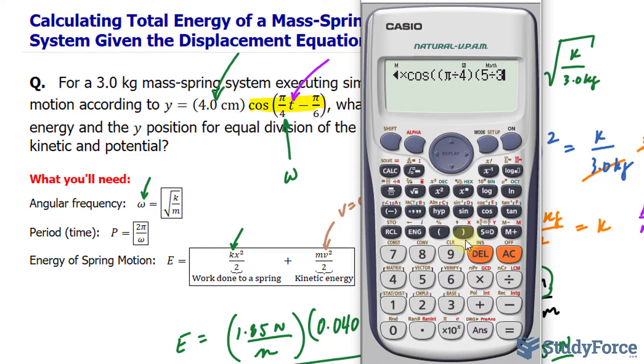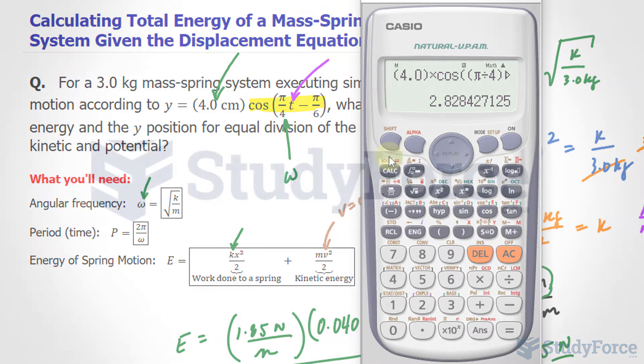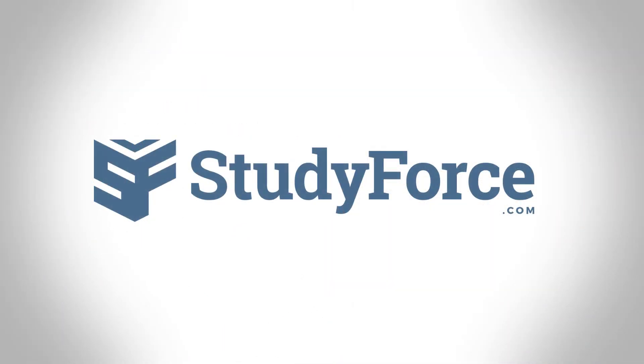Close, close, and the answer is 2.82. So when you reach a displacement of 2.83, the two types of energies, the potential and the kinetic, are the same.